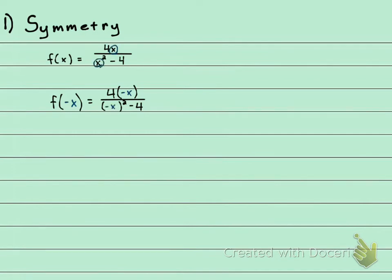Everywhere where I saw an x, I'm now plugging in the negative x. Let's see what happens. In the numerator I'm gonna get -4x. In the denominator, this is negative x squared, so that's a negative times a negative. Negative x times negative x is positive x² - 4.